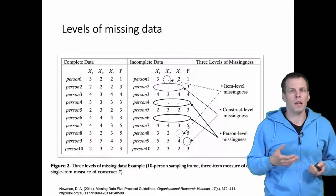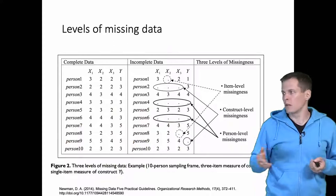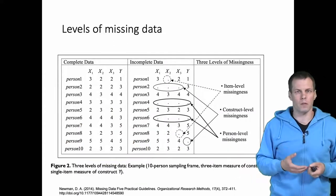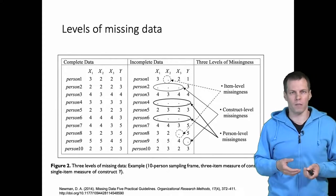Missing data patterns can be thought of as different levels. This is from Newman's article and he focuses on three different levels. First there is item level missingness.